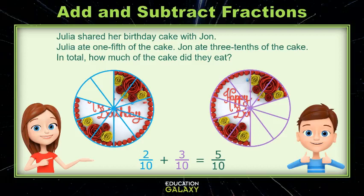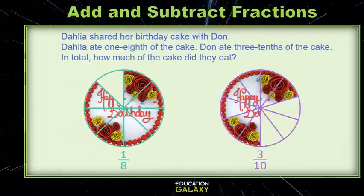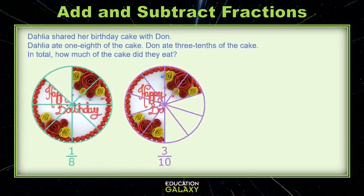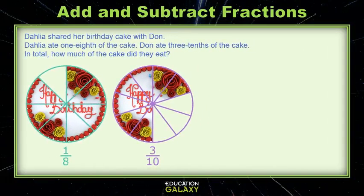Now let's try one of those together. Here we have Dahlia and she's sharing her cake with Dawn. So we want to add one eighth and three tenths, but we know now that to do that we need common denominators. So what common denominator can we have with an eight and a ten? Well, let's see. An eight doesn't turn into a ten, so ten, twenty, thirty, forty.